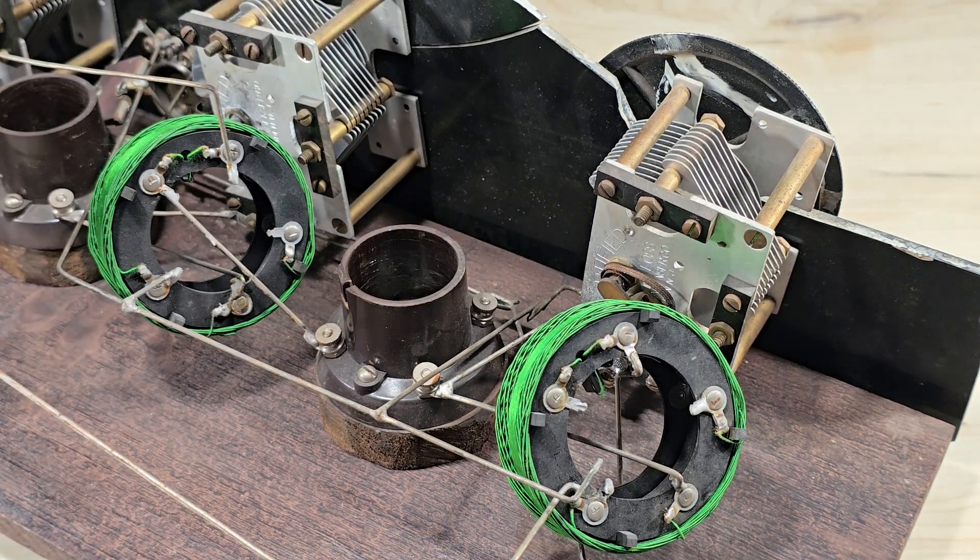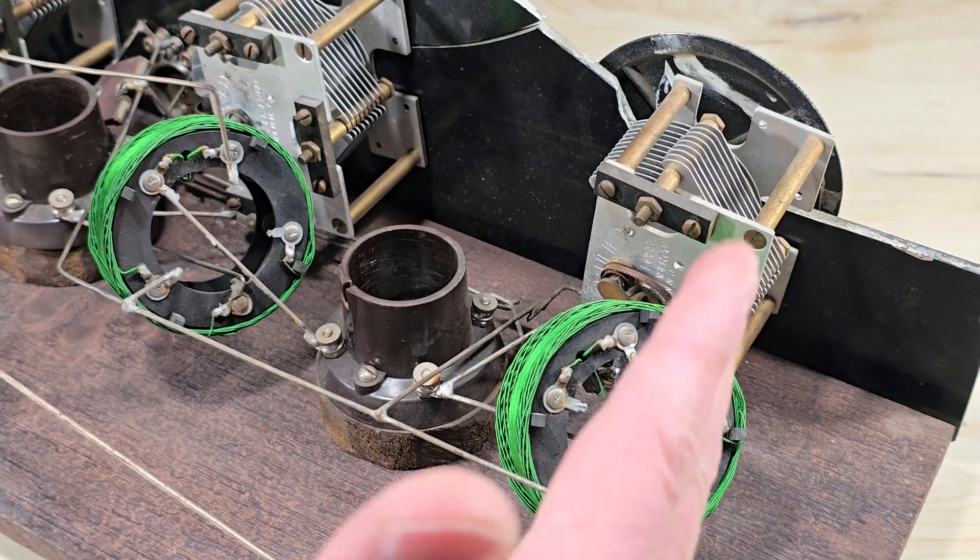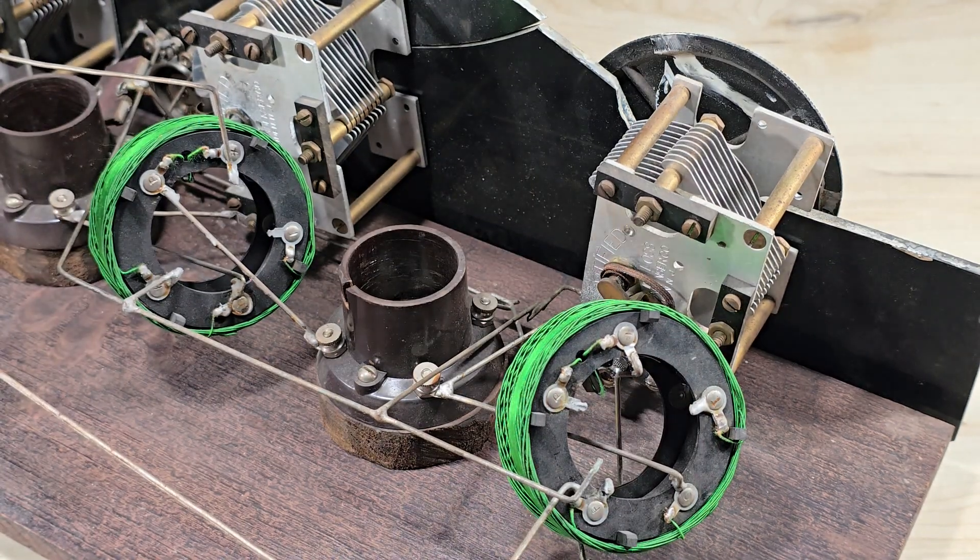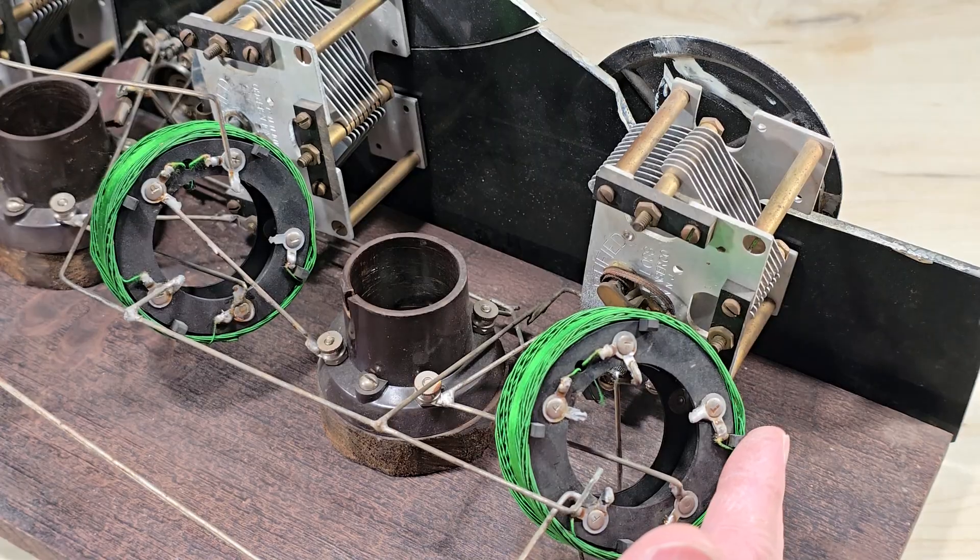This tuned radio frequency receiver is one of the older pieces in my collection. It features a right-to-left signal flow. The antenna would have been connected to this coil.